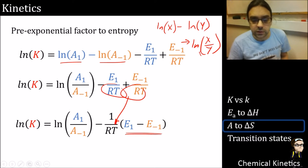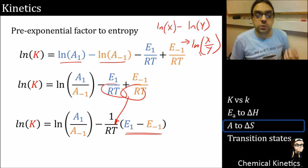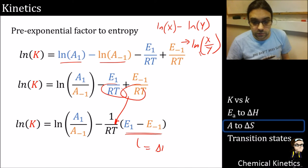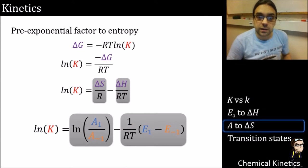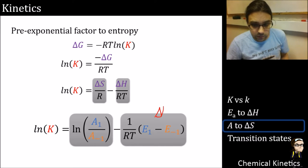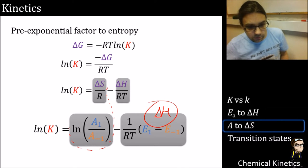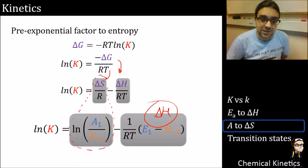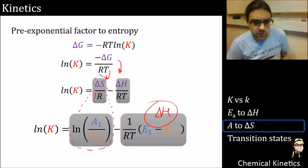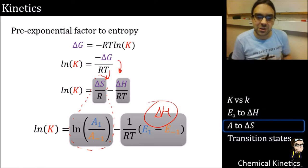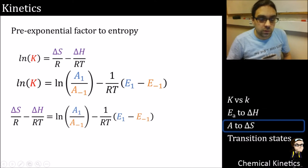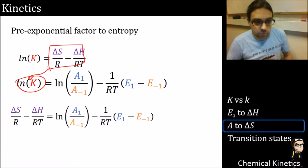Cancelling the negatives, one section looks very similar to our previous result that equaled delta H - so we substitute that in. Another section resembles our earlier log K equation, which we can relate back to delta G equals delta H minus T delta S, substituting and cancelling the T terms.